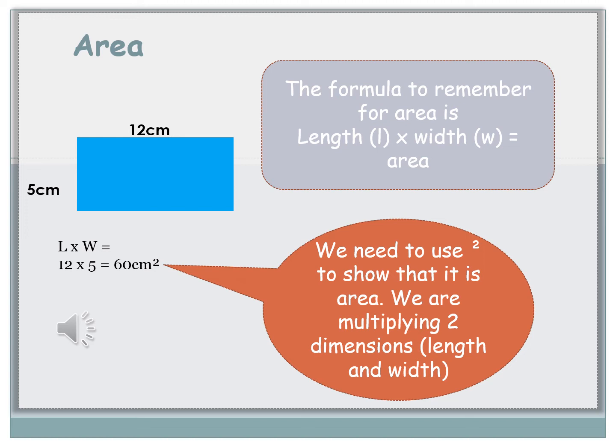If you look at the example, shape A, you've got your length of 12 centimeters and your width of 5 centimeters. Looking at our formula, we do length times width, so 12 times 5, that equals 60 centimeters, and then we would write that as 60 centimeters squared.